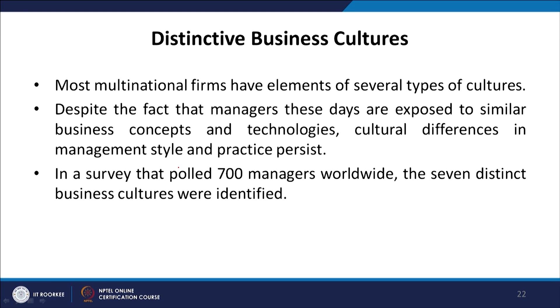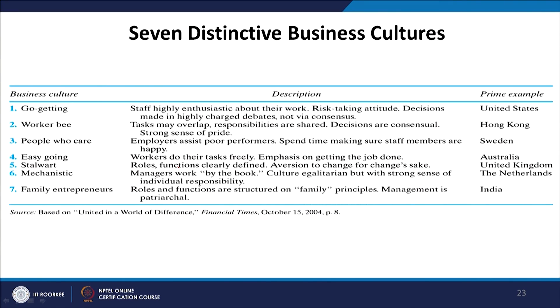Most multinational firms have elements of several types of cultures. Despite managers being exposed to similar business concepts, cultural differences in management styles persist. A survey of 700 managers worldwide identified seven distinct business cultures. The first is 'go-getting' — staff highly enthusiastic, risk-taking attitude, decision-making through charged debate rather than consensus — found in the United States. The second is 'worker bee' — tasks overlap, responsibilities are shared, decisions are consensual with a strong sense of pride — found in Hong Kong.